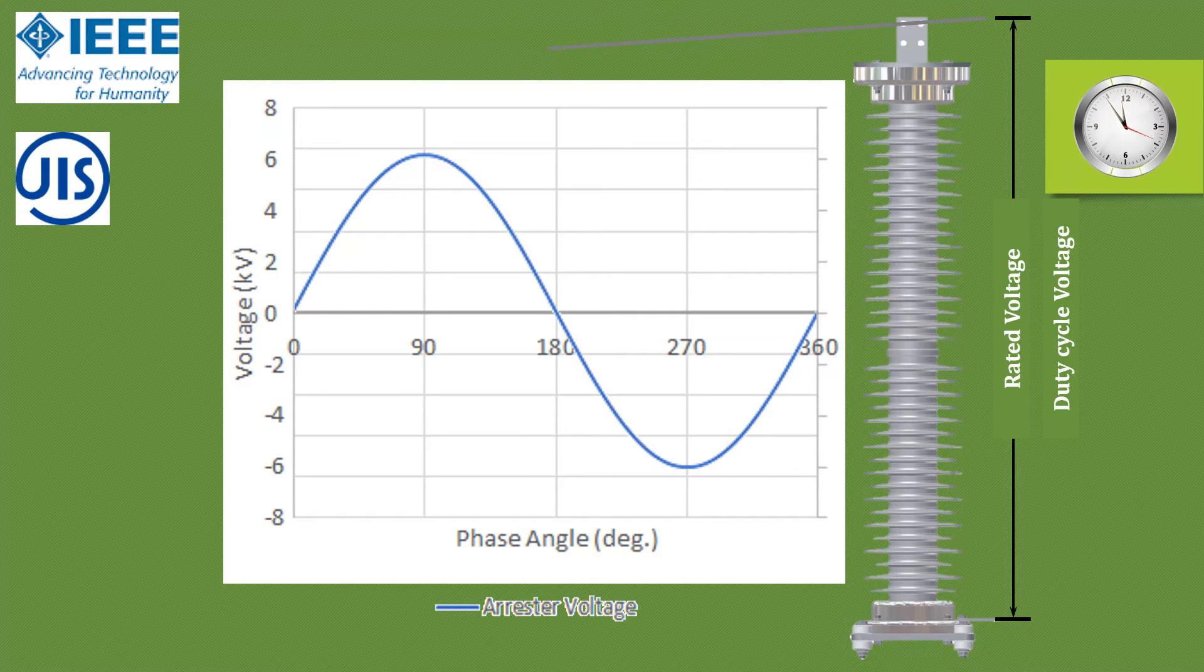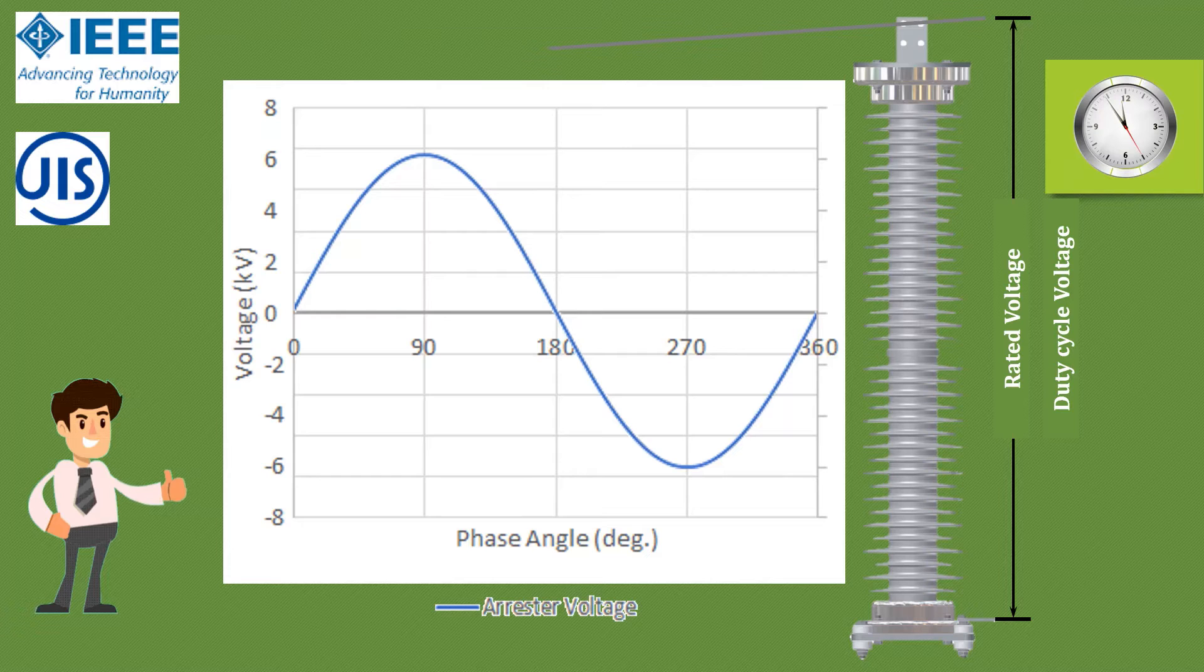So as per GIS and IEEE standard, it is the maximum voltage applied across the arrestor terminals in the duty cycle.